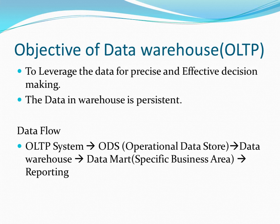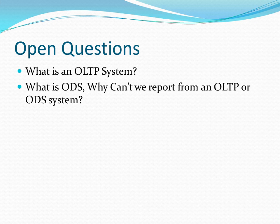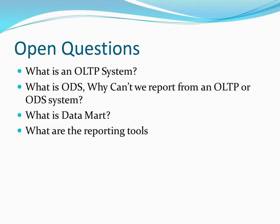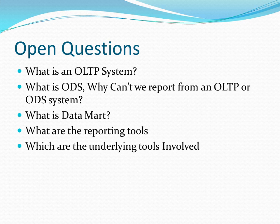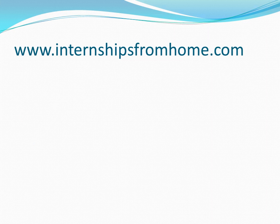The data in a warehouse is persistent. The data flow for reporting works as follows: first, data enters the OLTP system; from there it goes to the integration layer — the ODS, or Operational Data Store — between the OLTP system and the data warehouse; and from the data warehouse, data can go to a Data Mart on which reporting is done. Open questions remain, such as what is an OLTP system, what is ODS, what is a Data Mart, and why reporting is done on Data Mart and Data Warehouse rather than OLTP or ODS. These will be answered in the next session. For questions, reach out at www.internshipsfromhome.com.